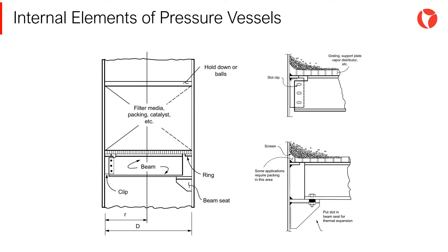Beams are typically supported by one of three methods: beam seats, clips, and support rings. Beams should never be welded directly to the vessel wall because of the restraint they would impose on vessel growth. All of the methods listed above will allow for the radial expansion of the vessel due to temperature and pressure. Slotted holes in the clip or for the bolting attaching the beam to a beam seat allow for expansion.